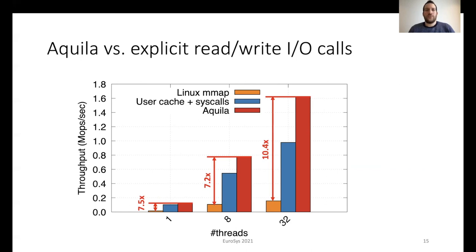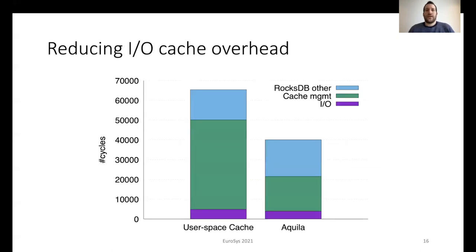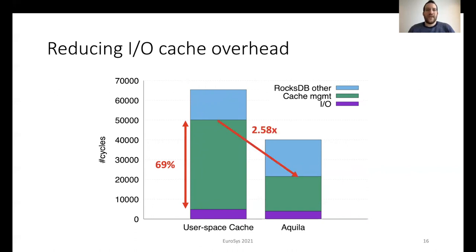This shows that Linux mmap is not appropriate for data-intensive applications and Aquila overcomes these limitations. To understand where these benefits come from, we provide a breakdown of the storage cache management overheads. We show two bars: a user space cache configuration on the left and Aquila on the right, both using RocksDB. The Y-axis shows the number of cycles. Each bar consists of a purple part for I/O, a green part for cache management excluding I/O costs, and a light blue part for the remaining RocksDB costs. With a user space cache, 69% of the total execution time goes to cache access and cache management. With Aquila, we reduce this cost by 2.58 times, resulting in 43% of the total execution time, leaving precious CPU cycles for further user processing.